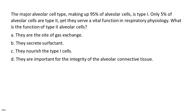The major alveolar cell type, making up 95% of alveolar cells, is type I. Only 5% of alveolar cells are type II, yet they serve a vital function in respiratory physiology. What is the function of type II alveolar cells?